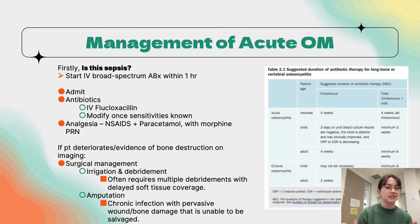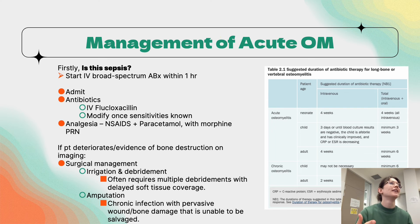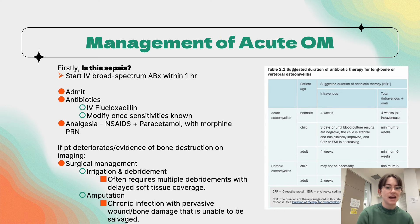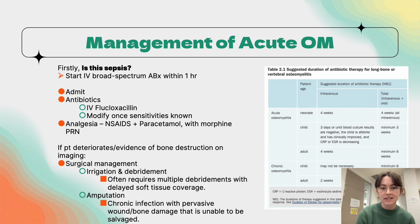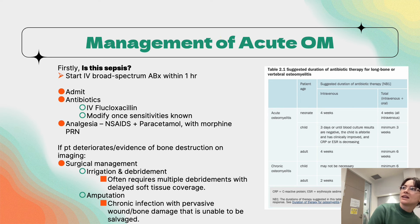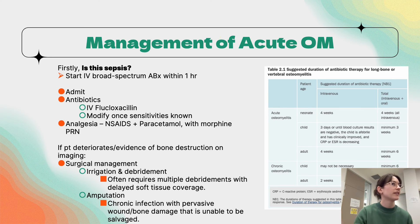If the patient deteriorates or there is evidence of bone destruction, surgery is required. The two options are irrigation and debridement — reserved for cases where necrotic and soft tissue can be adequately removed — or amputation when the limb is not salvageable. Regarding antibiotic duration, acute osteomyelitis in an adult requires four weeks of intravenous therapy, with a minimum of six weeks total antibiotics before switching to oral.